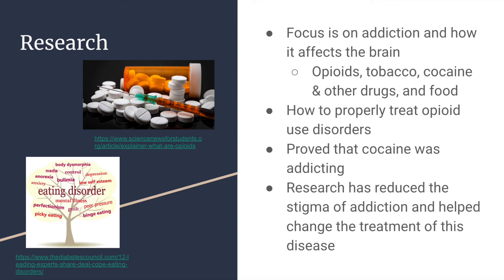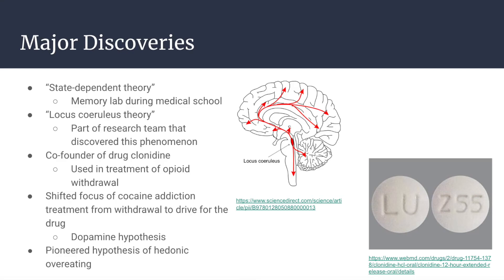His research has helped reduce the stigma surrounding addiction, working to prove that addiction truly is a disease, and has helped change the treatment of addiction. Some of his major discoveries have included what is now called the state-dependent theory, which he uncovered while working in a memory lab during medical school. He realized that if a student uses amphetamine while studying, they will need to use it again to effectively remember the information later. He received the American Medical Association's National Student Research Award in Neuroscience for this discovery.